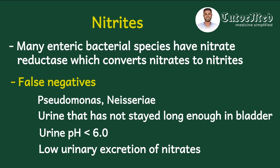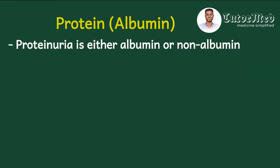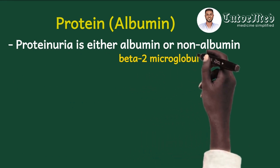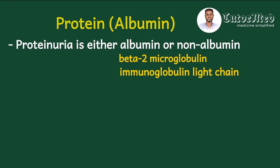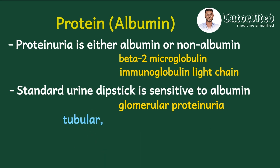Now turning to proteins or albumin: if a patient has proteinuria it could be due to albumin in the urine, or non-albumin proteins like beta-2 microglobulin or immunoglobulin light chains. The urine dipstick is comparatively more sensitive to albumin than to other proteins, so a negative dipstick does not rule out protein in urine — it could be from non-albumin proteins. Generally, proteinuria can be glomerular proteinuria from glomerular damage, or tubular proteinuria from tubular dysfunction leading to inability to reabsorb small proteins.